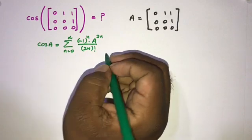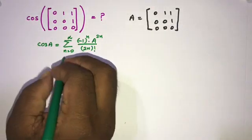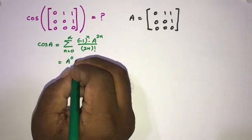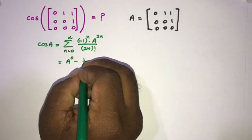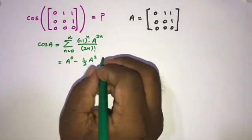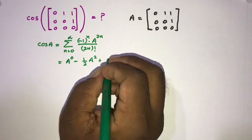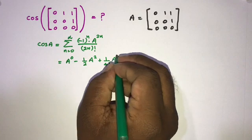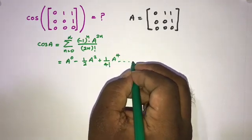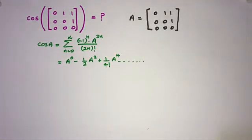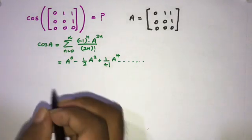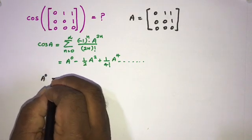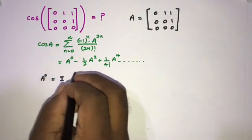We know cosine of A is given by the formula: the infinite sum from n=0 to infinity of (-1)^n times A^(2n) over (2n) factorial. We can write this as: A^0 minus (1/2) A² plus (1/4!) A^4 minus and so on.